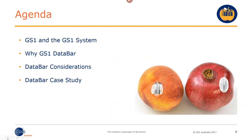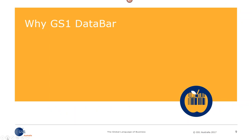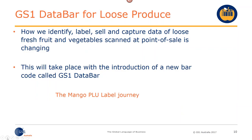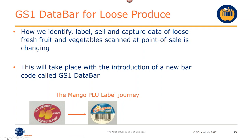GS1 standards have been in use for a long time, but this is the first time we're seeing barcodes on a loose fruit item. This is the first barcode we've released in over 43 years. GS1 barcodes have been adopted within Australia for a long time, but now how we identify, label, sell, and capture data on loose fruit and vegetables scanned at point of sale is changing. With the introduction of a new barcode, we can see the evolution of the label has changed from purely having a PLU number to identify that commodity and variety.